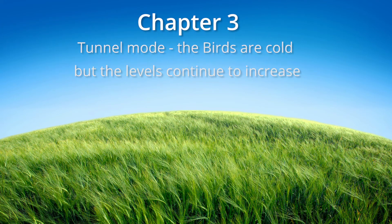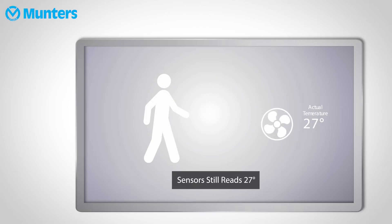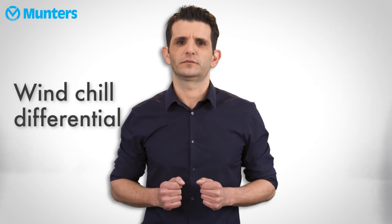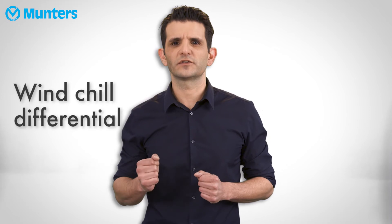Let's move to the issues related to tunnel mode. In tunnel mode, there is a windchill effect on the birds, meaning the birds feel cooler than actual temperature — very similar to a person standing in front of a fan. The temperature between the person and the fan would be the same even if the fan was not there, but still the person would feel cooler. This is the windchill effect. In order to compensate for this effect, we have a parameter called windchill differential, which is located in the Levels of Ventilation table.